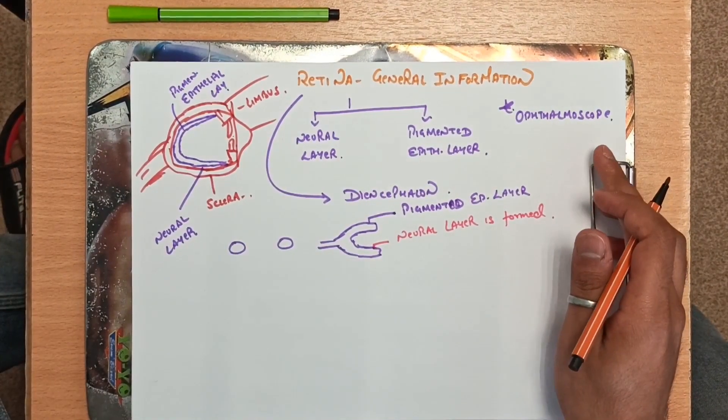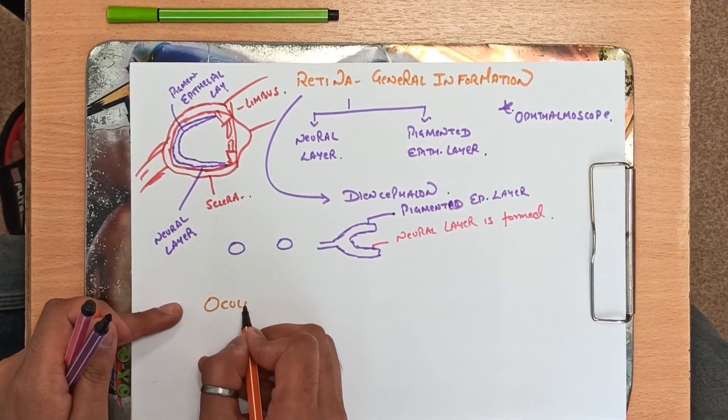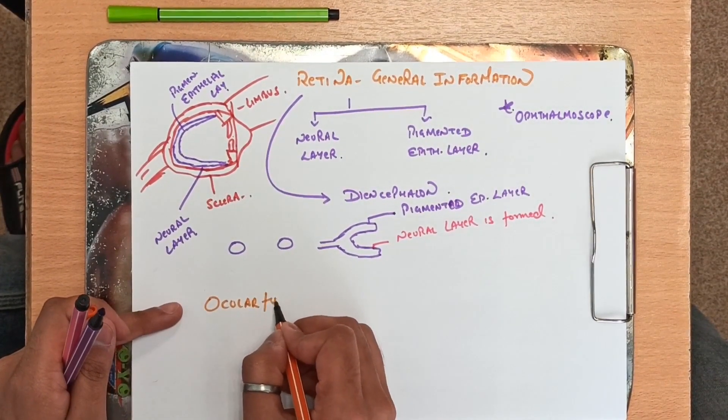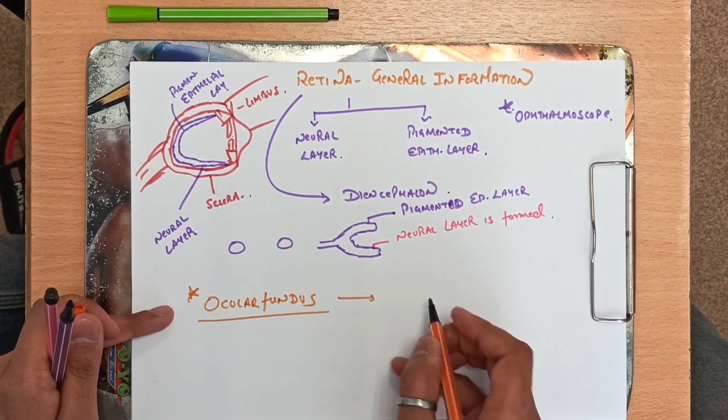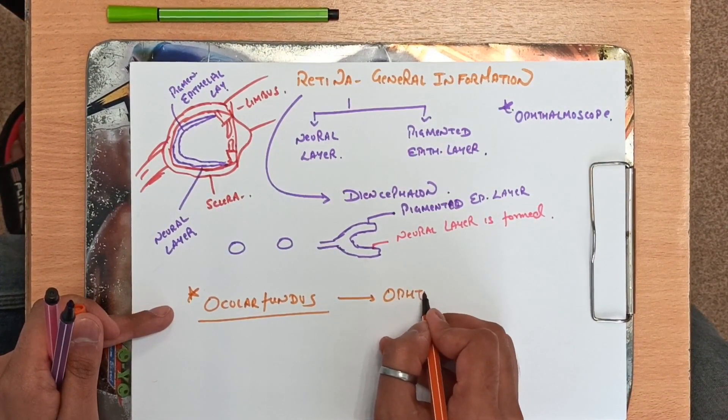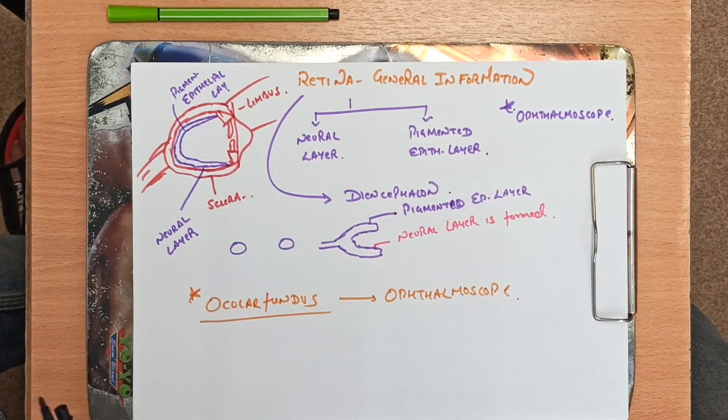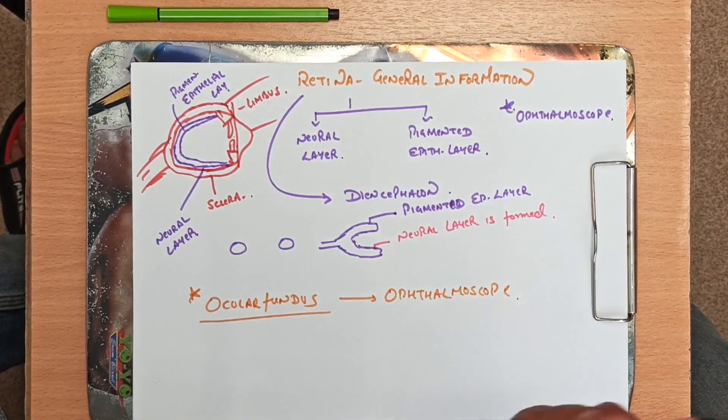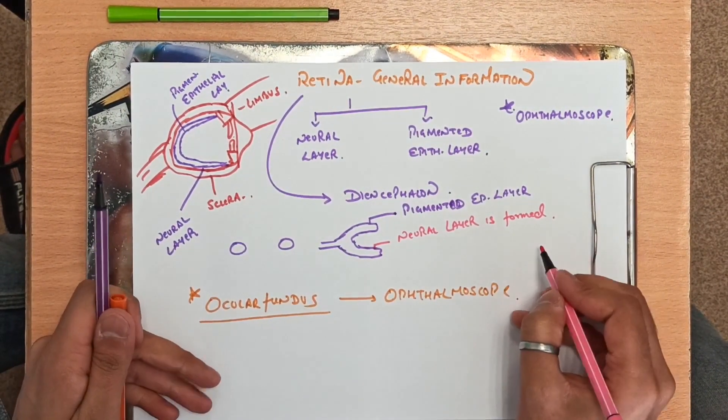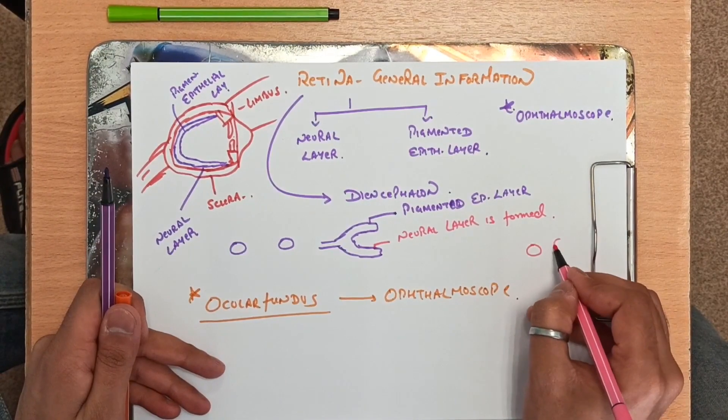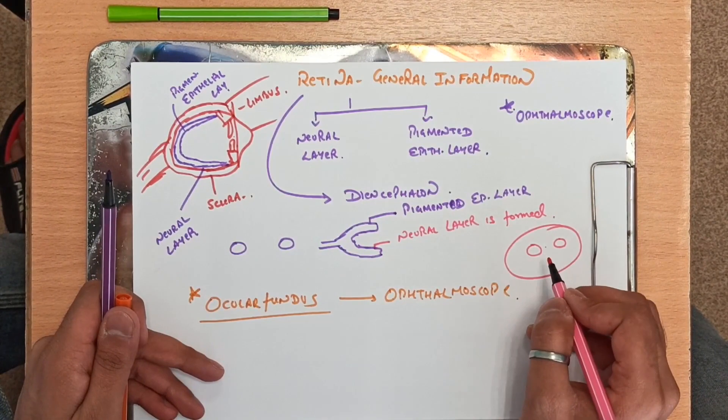Now one thing I'd like to tell you - when you are seeing from an ophthalmoscope there is a part called the ocular fundus. This is the part which is visible from an ophthalmoscope. You might have seen different pictures in which when eye is seen there are two structures. Now I will be telling you what these two structures are.